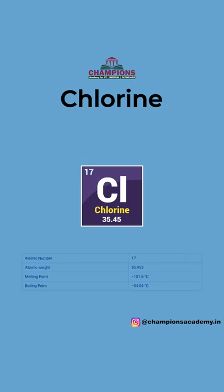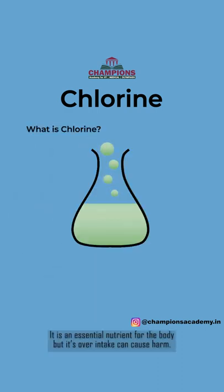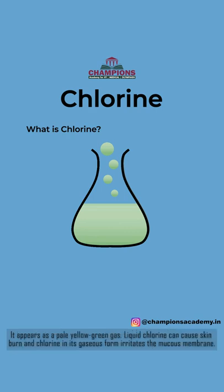Chlorine: atomic number 17, atomic weight 35.453, melting point minus 101.5 degrees Celsius, boiling point minus 34.04 degrees Celsius. It appears as a pale yellow-green gas. Liquid chlorine can cause skin burns, and chlorine in its gaseous form irritates the mucous membrane.